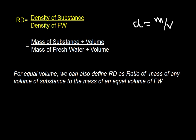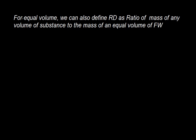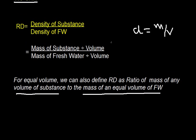For equal volume, we can define RD as ratio of mass of any volume of substance to the mass of an equal volume of fresh water. In this equation, if I keep the volume equal, that will cancel out. So mass of substance divided by mass of fresh water in equal volume gives the relative density.